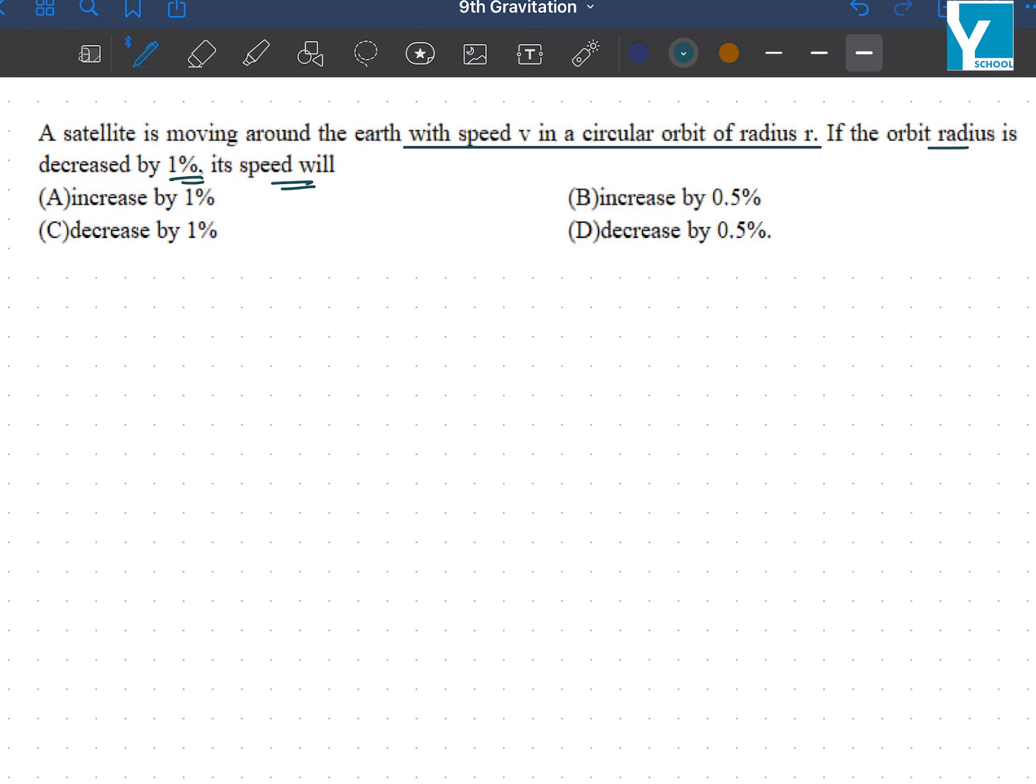So we know that when orbiting, mv² by r is satisfied by the gravitational pull of the earth. So we can write it like this.